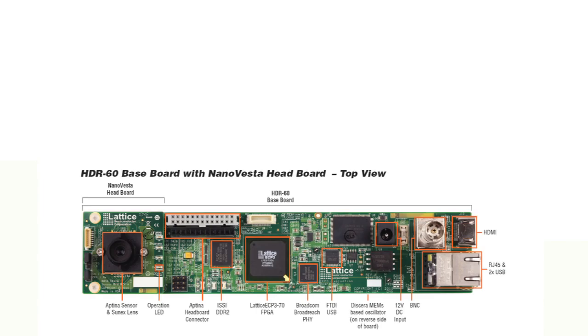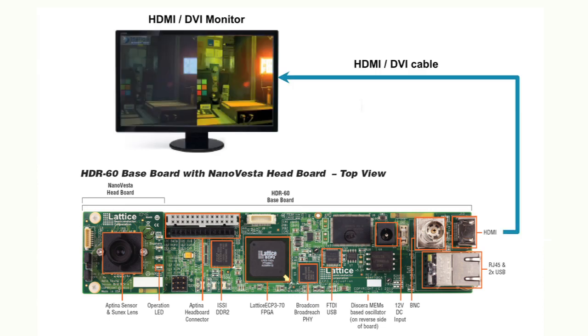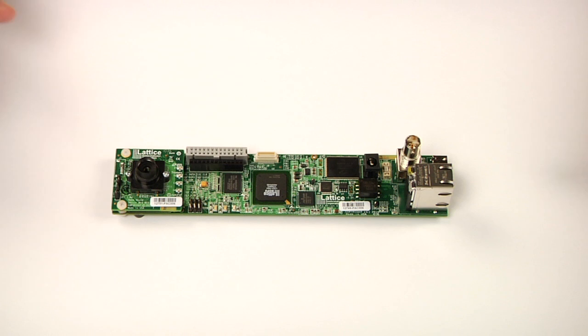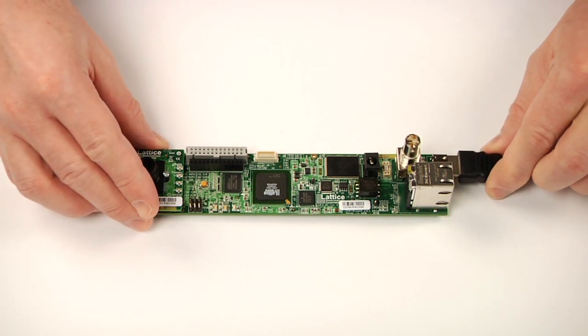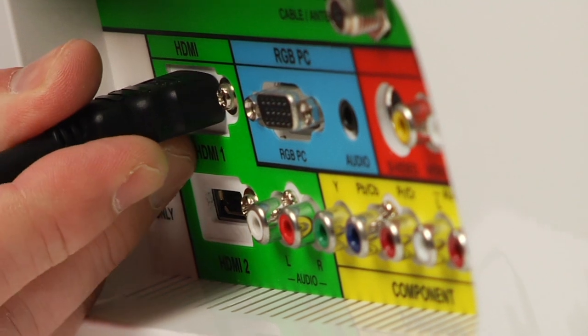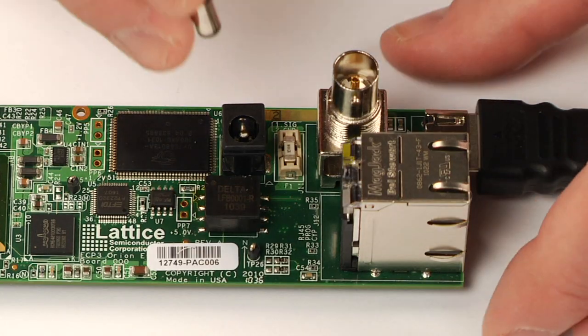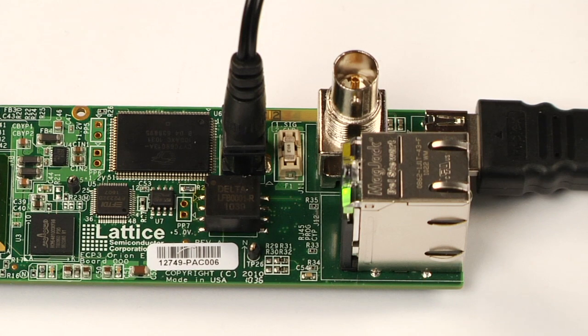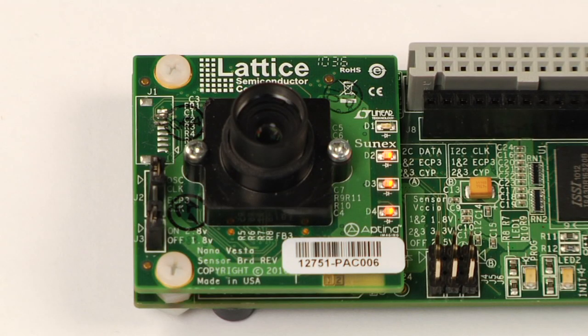Using the kit to display a high dynamic range or HDR demo is a simple plug and play operation. Simply plug the supplied HDMI cable into the HDMI connector on the board and plug the other end into an HDMI monitor. Power up the board with the included power supply and you are ready to go. LED D4 will blink indicating that the device is loaded correctly.